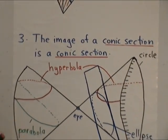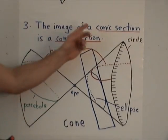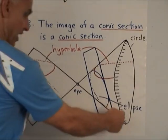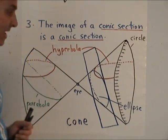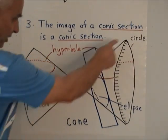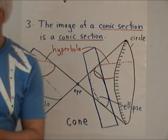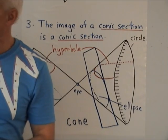All right. Our third rule for perspective is that the image of a conic section is always a conic section. So by conic section, we go back to the ancient Greeks. We have a circle and a vertex, and we join the circle to the vertex, creating a cone. Now if we intersect that cone with a plane...